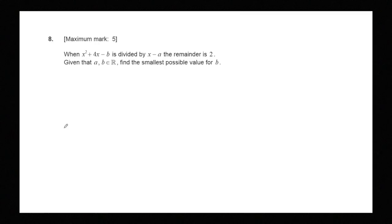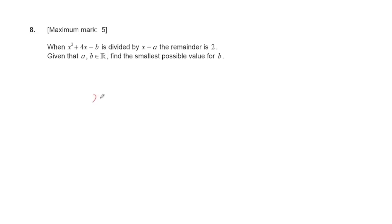First, I will perform polynomial division. Take x² + 4x - b divided by x - a. Divide the highest degree term: x² divided by x equals x. Multiply back to get x² - ax.